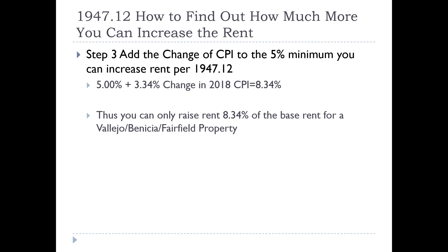If we were to do the rental increase this year, it would be 5% plus 3.34% — the change in CPI from 2018 — reaching a total of 8.34%. For any properties that don't have the CPI index published by the Bureau of Labor Statistics at the federal level, you can only raise the rate 8.34%, because you have to use the state numbers. Apparently the state averages the four numbers the federal government provides to come up with that figure.